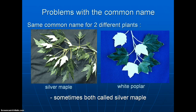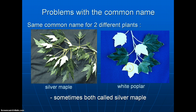Another problem is that sometimes the same name is used for two completely different plants. Take silver maple, for example, which is a true maple with lobed leaves and a silvery underside to the leaf. There is another plant that also has lobed leaves and a woolly white underside, but it turns out this second plant is not a maple at all — it's a poplar, a totally different family with no relationship whatsoever. Yet people call it silver maple, and many students have brought me samples saying they have silver maple in their yard, only for it to turn out to be white poplar.